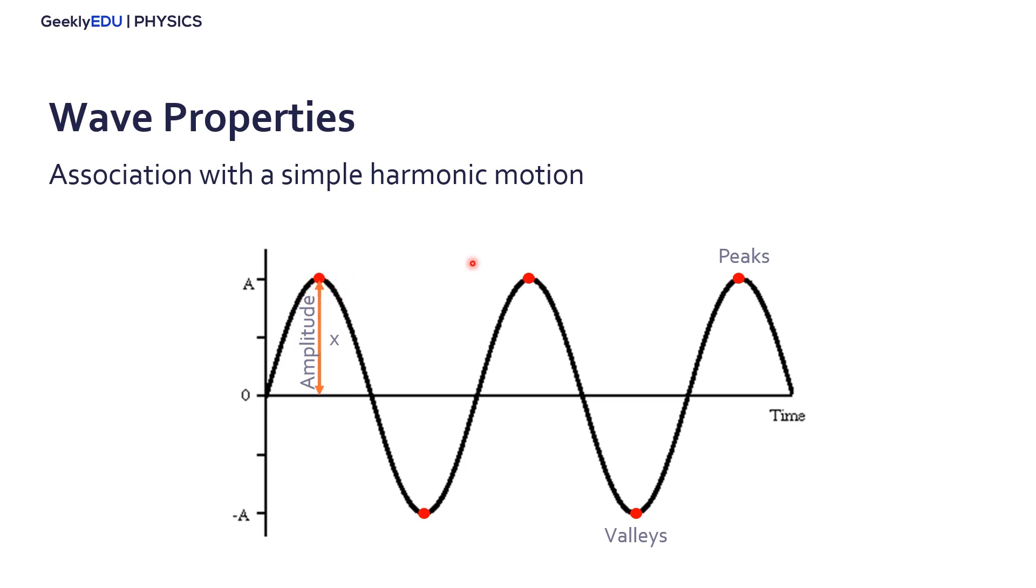The distance between two peaks or two valleys is the wavelength. Also note that the wave is traveling through time, so we have a speed and that's the propagation speed of the wave.